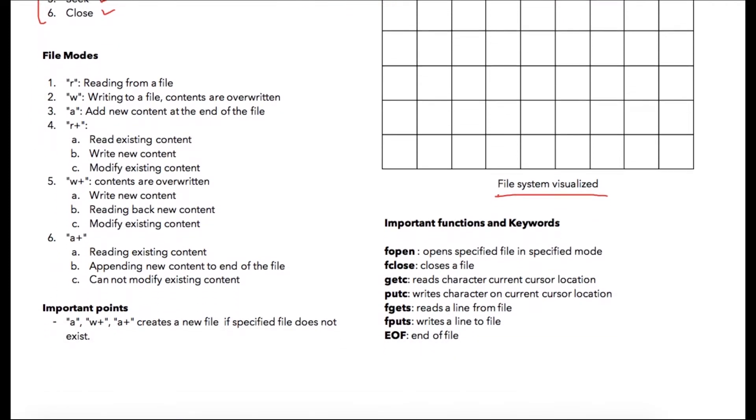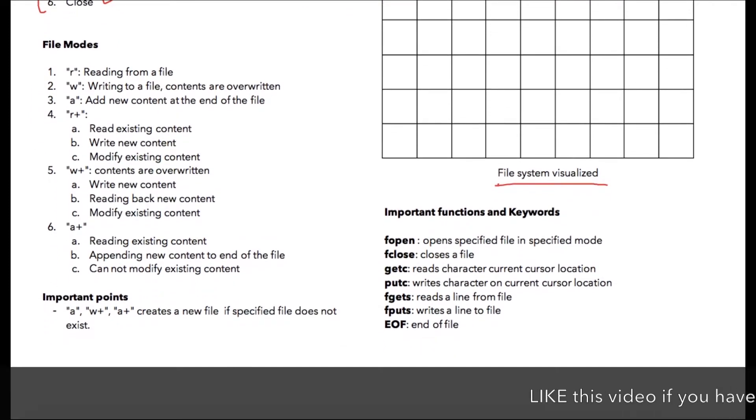Now let us check what are different file modes which we can use to perform file operations in C language. r is file mode for reading data from a file. w is writing to a file and in this case contents are overwritten. So if your file that you have opened in write mode has some previous content then that whole content will be erased and new content will be written over it.